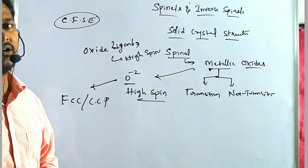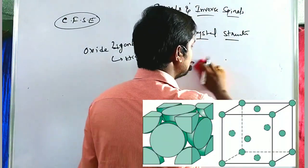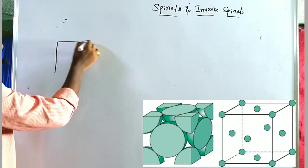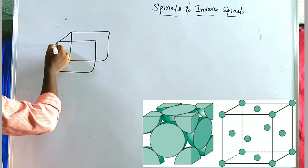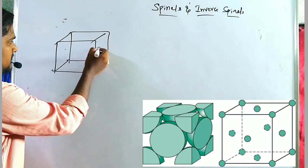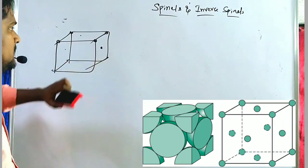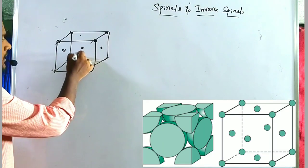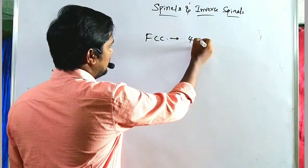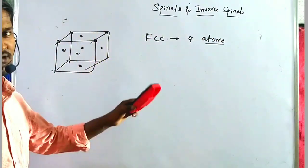The O²⁻ ions are generally present in an FCC or cubic close packing structure. In an FCC structure, atoms are present at corners as well as face centers. Such a structure is called FCC, and it contains 4 atoms per unit cell — as discussed in solid-state lectures.